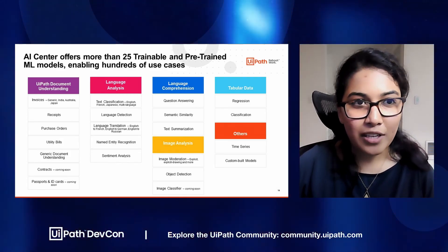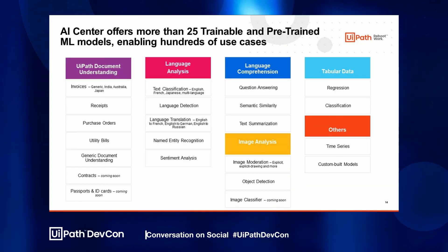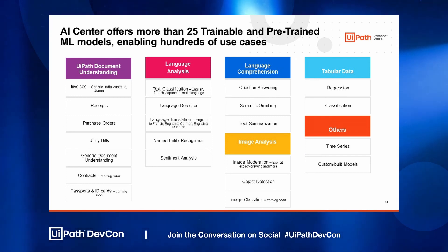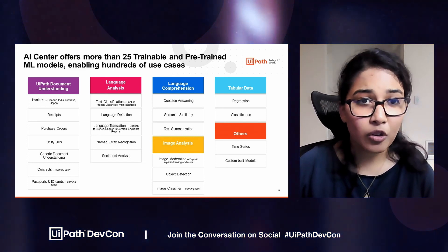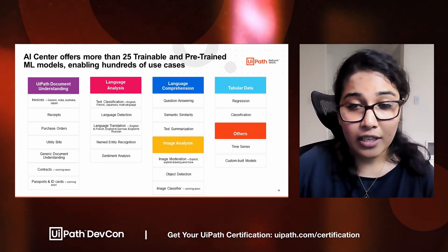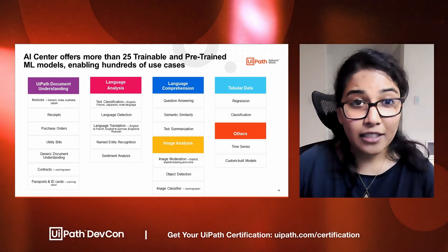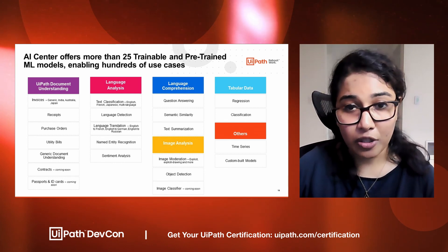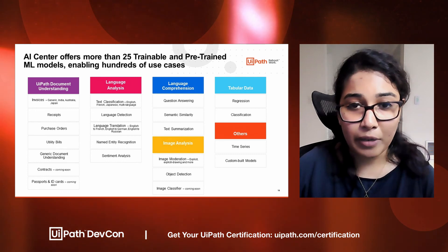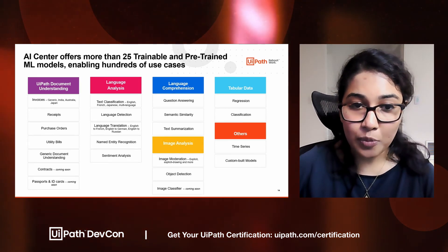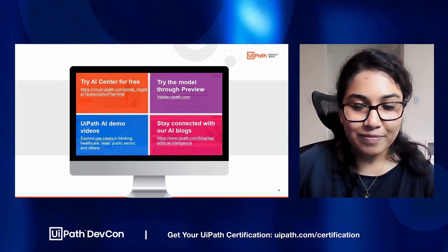Now that you've seen the demo, let's talk about what else AI Center offers. We have many already existing pre-trained and trainable models. Under Document Understanding, we have an invoice and purchase order model. Under language analysis — where the NER model sits — we also have a text classification model, a translation model, a pre-trained named entity recognition model, and a sentiment analysis model. For language comprehension, there's a semantic similarity model, an image analysis model, and others. With AI Center, you can deploy, modify, and consume all of these within your business workflows. Thank you.